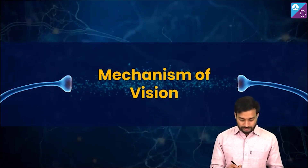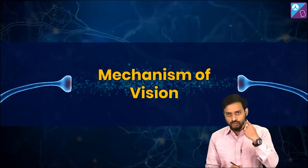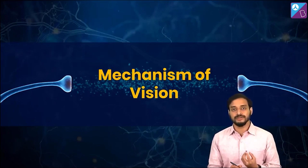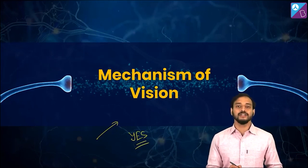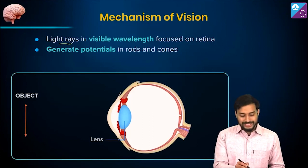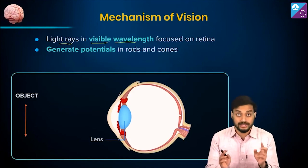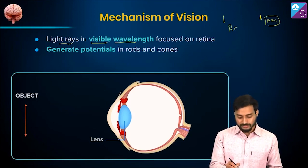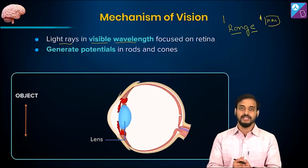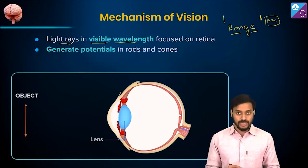I'll be talking about the mechanism of vision. What do you think is the neural system involved for you to visualize and perceive the sense of vision? Yes, of course — the optic nerves which connect the eye to the brain. So the light rays in visible wavelength — please note this word, we cannot perceive light at all wavelengths. What is the value in nanometers of the visible range? Physics people, tell me the range.